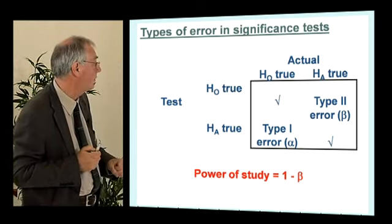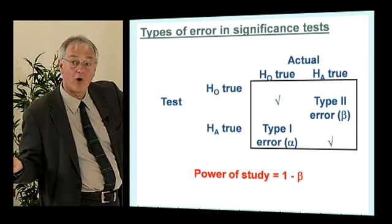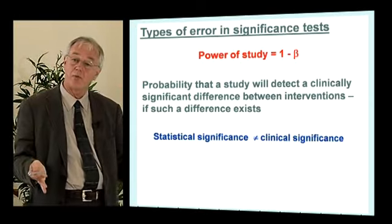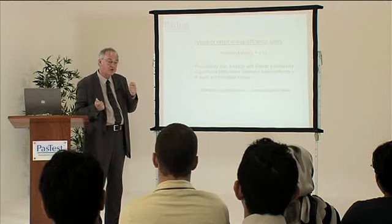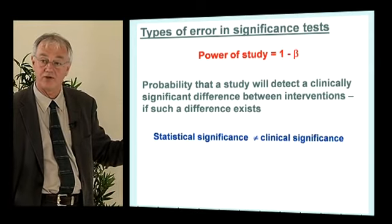The power of a study is the opposite of the type 2 error. It's the probability that if there is a clinically significant difference between our interventions, our study will find it. If we say the power of our study is 90%, we have set up the study so it has a 90% chance of detecting a clinically significant difference if it's there. Bear in mind that just because you've got statistical significance, you don't necessarily have clinical significance — and more importantly, the other way around: if you haven't got statistical significance, you can't claim the difference as clinically significant regardless of how big it is.